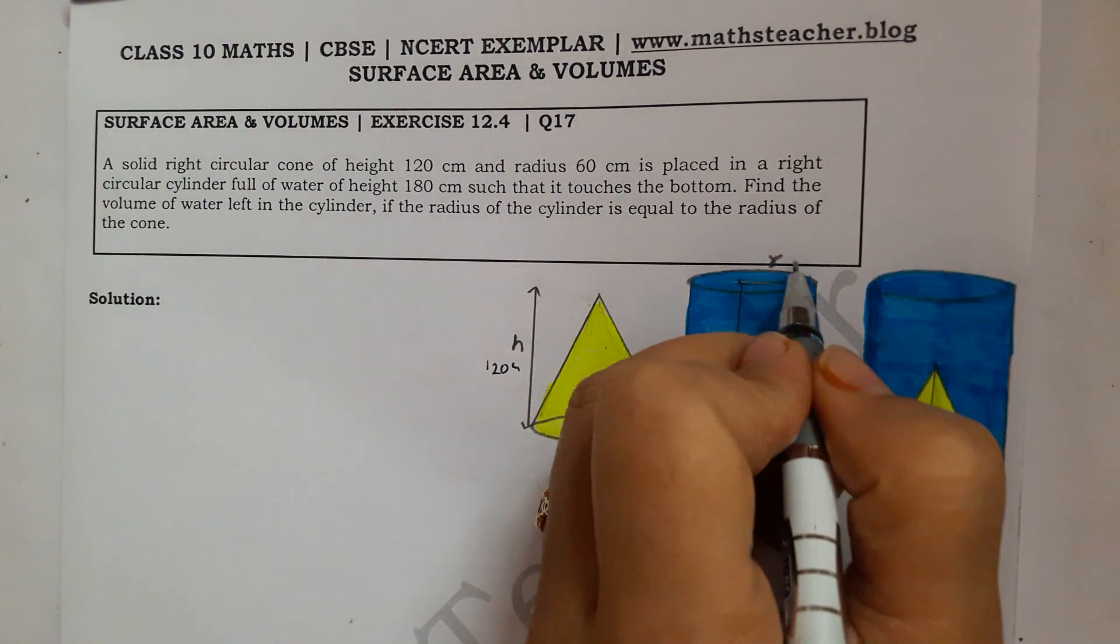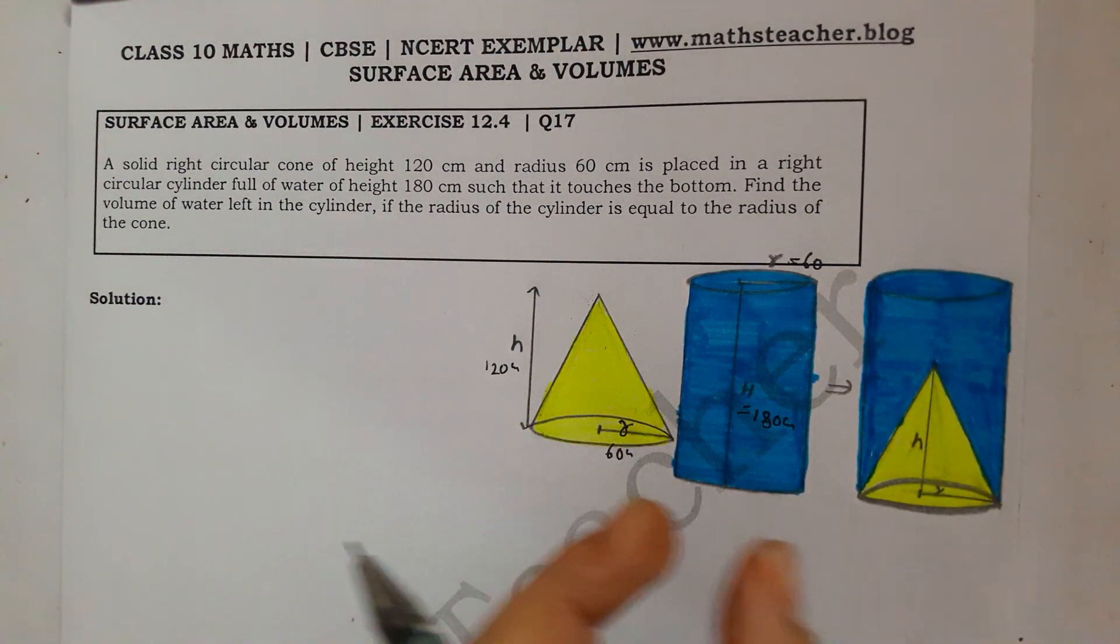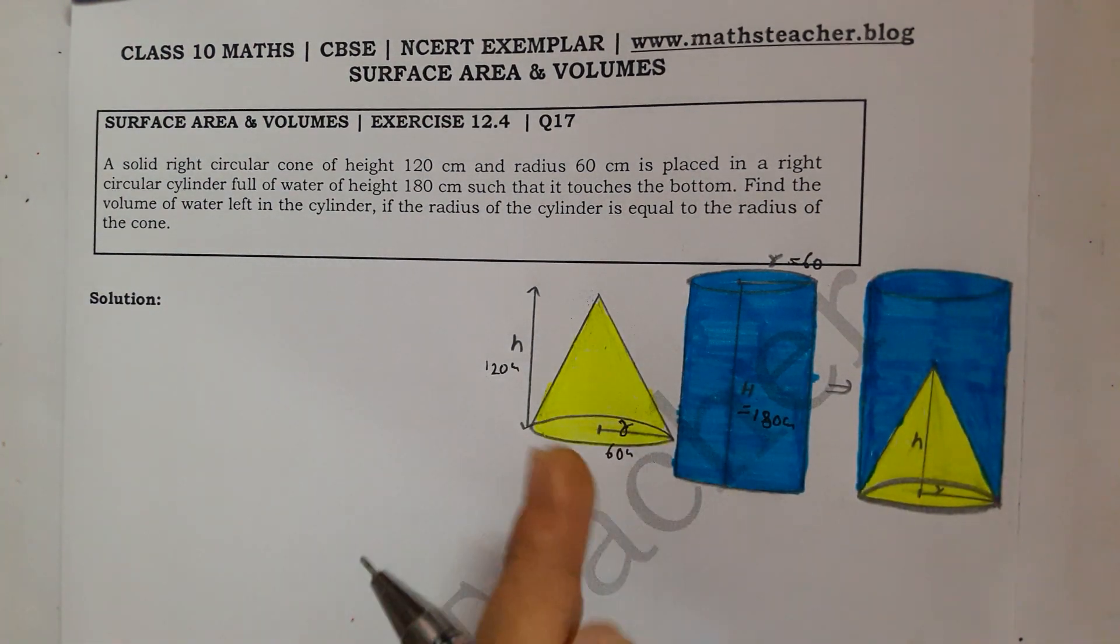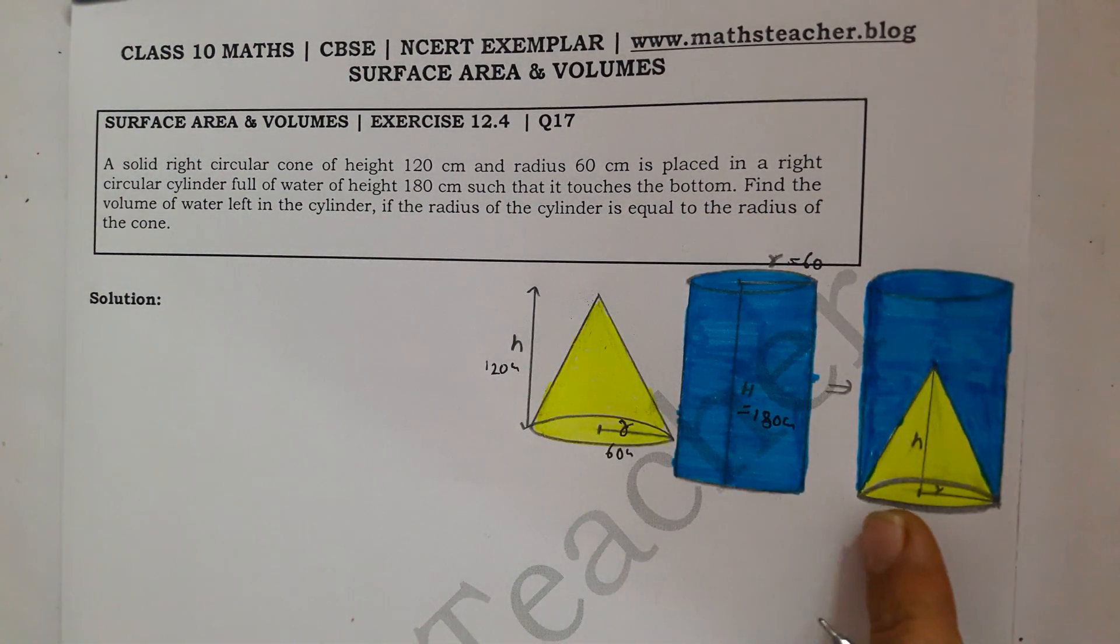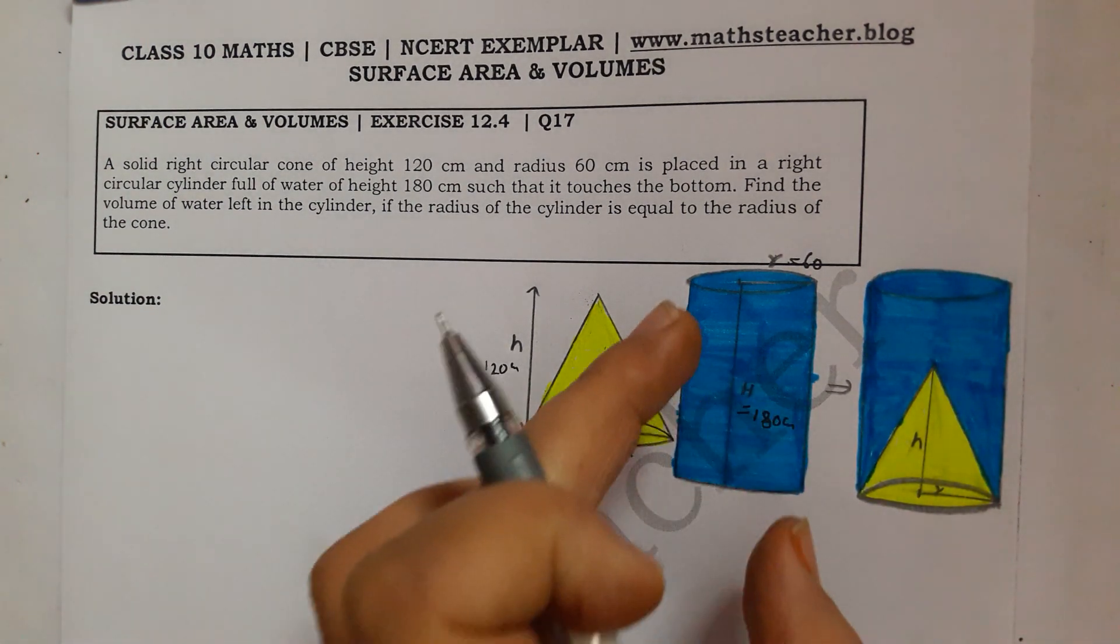That means the radius of the cylinder equals the radius of the cone. So what do you want to find? First of all, this cone is placed in a cylindrical tank full of water, and the cone is kept in the cylinder so it touches the bottom.